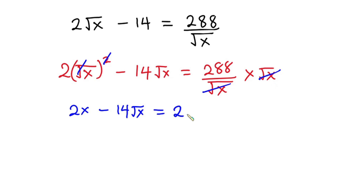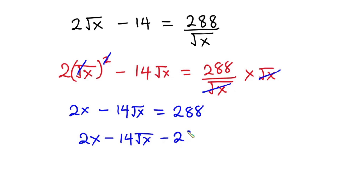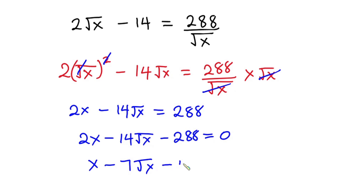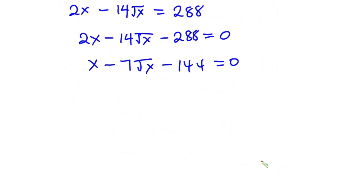Now we have 2x minus 14 square root of x equal to 288. Equating everything to zero, we have 2x minus 14 square root of x minus 288 equals zero. Now let's divide through by 2, so we have x minus 7 square root of x minus 144 equals zero.